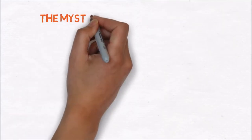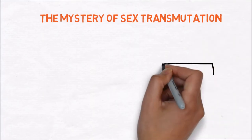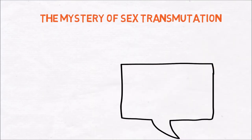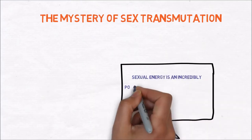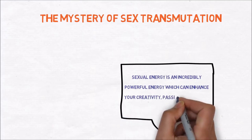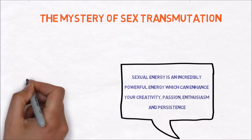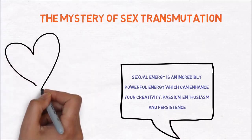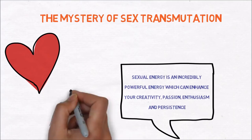Step 10 is the mystery of sex transmutation. This is one of the most controversial points in his book. Hill explains that sexual energy is an incredibly powerful energy which can enhance your creativity, passion, enthusiasm, and persistence. Love, romance, and sex can all be capable of helping men to achieve incredible things. That's why it's important to have a supportive partner.